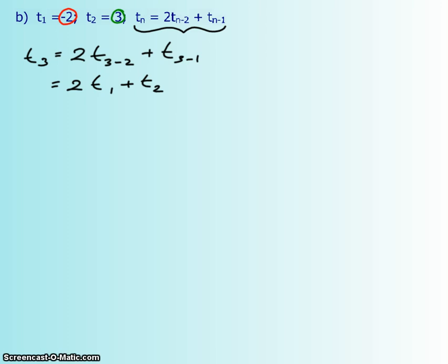And we already know what t₃₋₂ and t₃₋₁ are, so you're going to have 2 times negative 2 plus 3, and that's going to equal negative 4 plus 3 is negative 1.